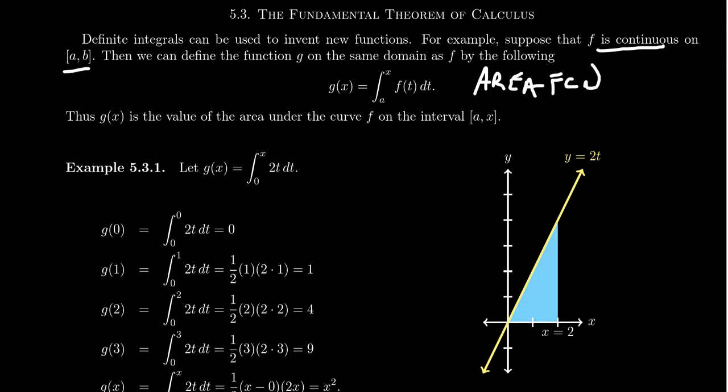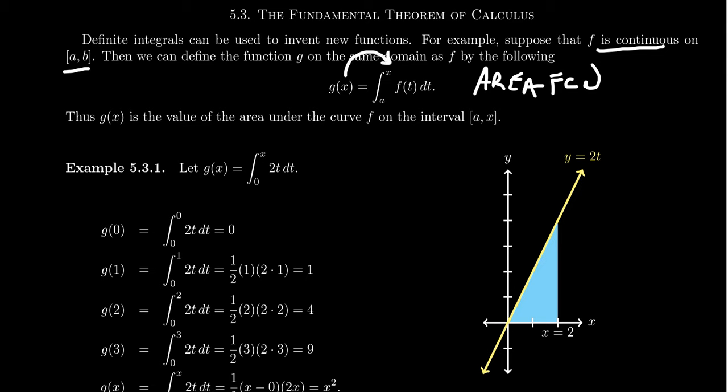Imagine we have a function f(x) continuous on some domain a to b. We can define a new area function in the following way: let's integrate the function f(t) dt as we go from a up to x. The lower bound is this number a, just a constant, and the upper bound we define to be x, a variable. This g(x) is calculating the area under f from a to x.